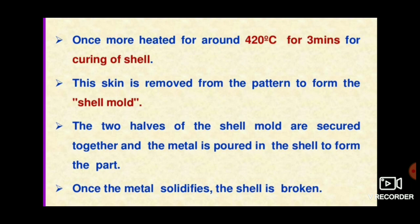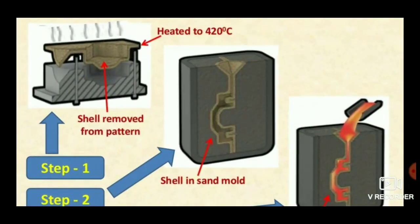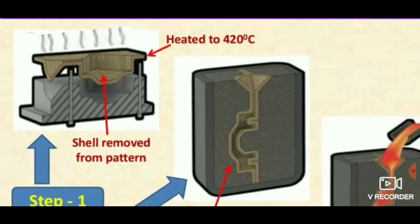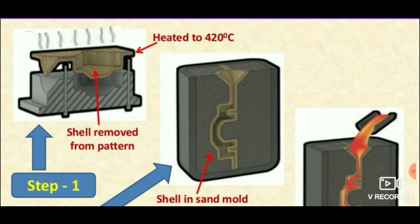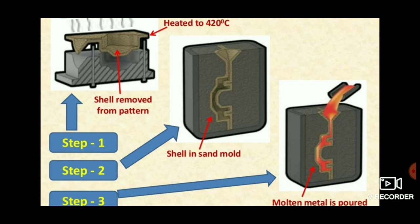After that, the two halves are prepared for making a mold. Once the metal solidifies, the shell is broken — as explained in this picture. The shell is then taken out and two shells are prepared, which are merged together to form a complete mold cavity, and molten metal is poured into it.